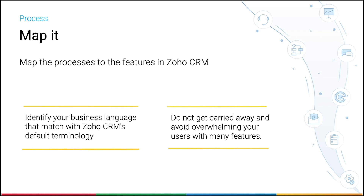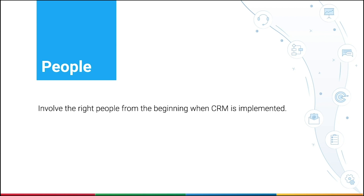Now onto the third and most important aspect of your implementation planning: the People. If a CRM chosen by top management is forced upon the sales teams without their consent, it will definitely lead to failure. Chances of rejection can be much higher if you don't involve the right people right from the beginning. Zoho CRM can improve and uplift your business, but only if you pull together the right mix of people in a team.